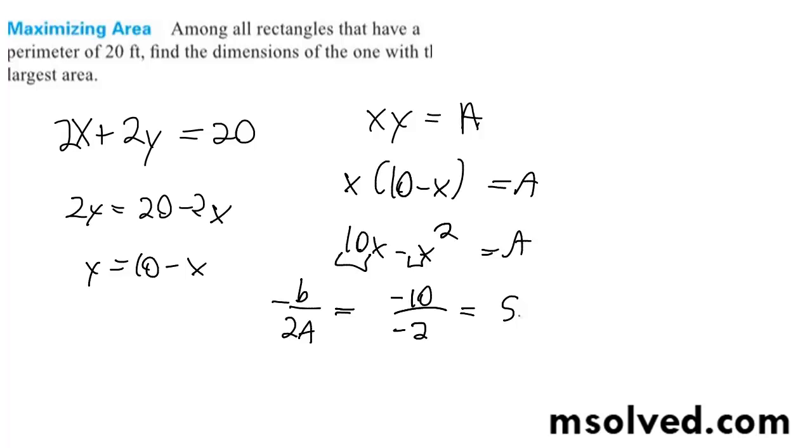So in terms of x, if x equals 5, substituting that back into the original equation, we have 10 plus 2y equals 20, so 2y equals 10, and y equals 5.